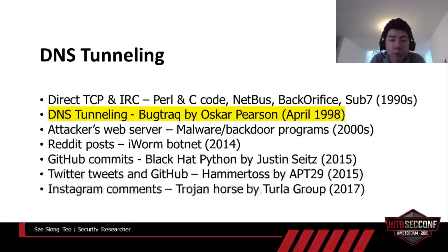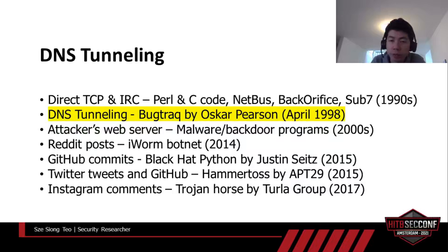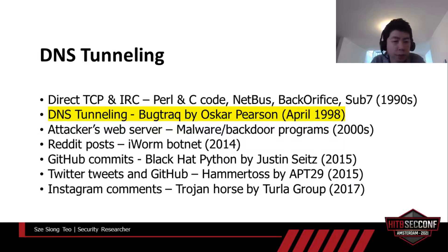Most Linux and Windows hacking tools at that time were using direct TCP for C&C communications. Back then, networks were simpler because every computer connected to the internet got an individual public IP address. Sub7 later released an updated version that started using IRC channels for C&C communication. DNS tunneling was introduced around the same time when Oscar Pearson shared his proof of concept on the Bugtraq mailing list.